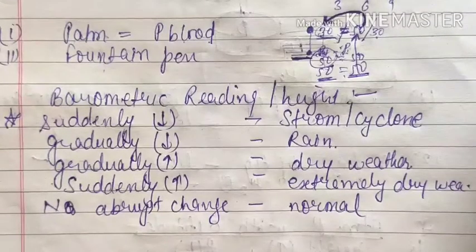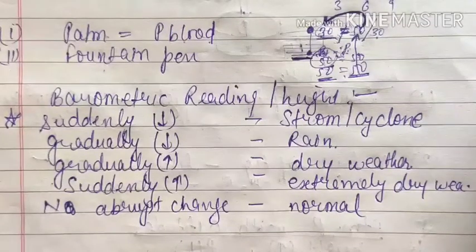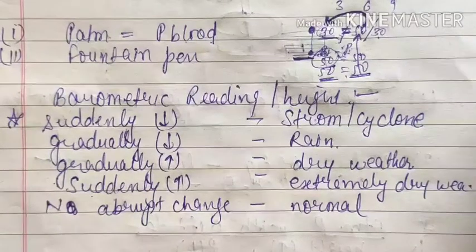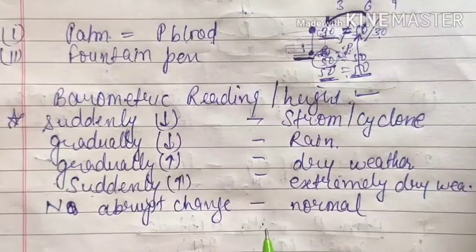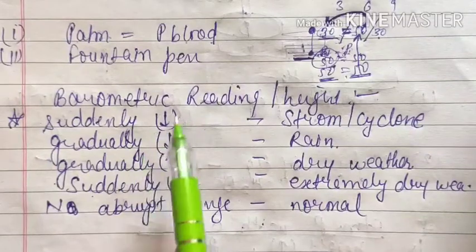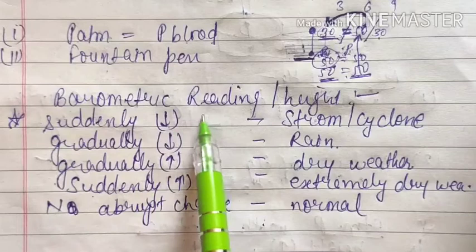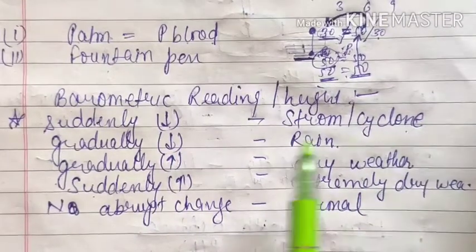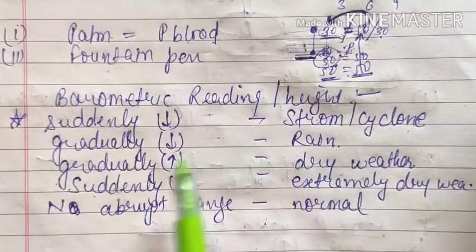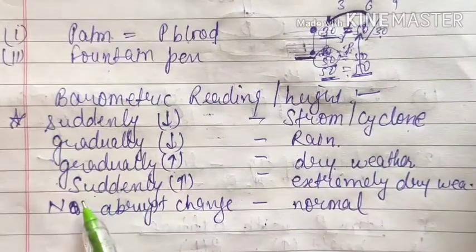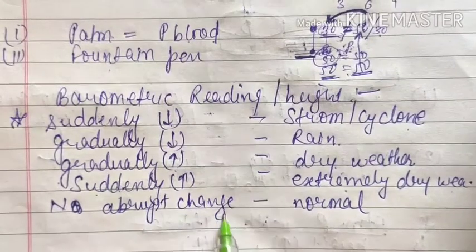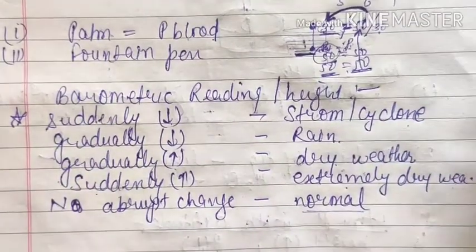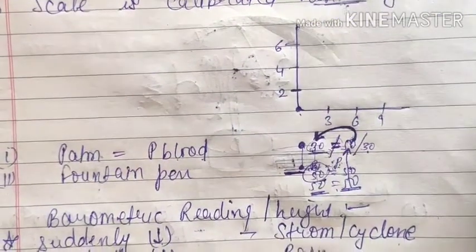One very important topic is that we can also get an idea about the weather from barometric readings. A two-mark question is often asked from this table. If there is a sudden decrease in the barometer reading — say from 76 to 60 — it indicates a storm or cyclone. A gradual decrease indicates rain. A gradual increase indicates dry weather. A sudden increase indicates extremely dry weather. If there is no much change in the reading, the weather will be normal. So the barometer is used for both weather forecasting and height measurement.